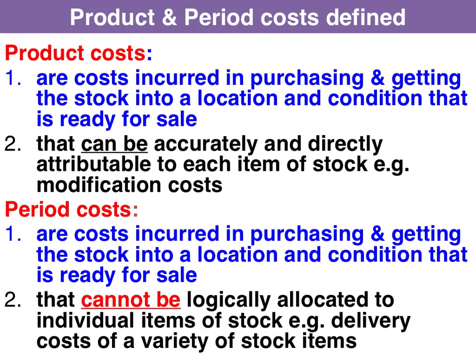There are three key attributes of a product cost. The cost is incurred in purchasing and getting the stock into a location and condition ready for sale, and it can be accurately and logically attributed to an individual stock item. Your classic example being the purchase price of the stock itself.